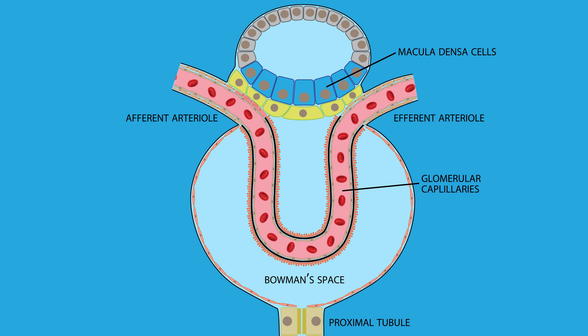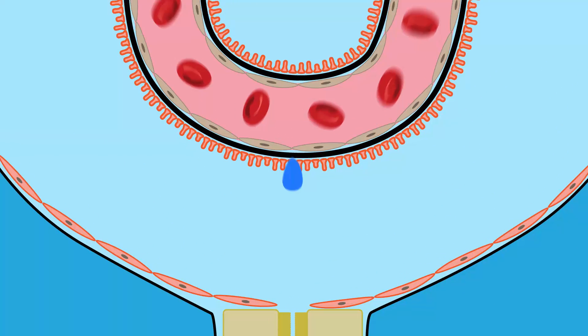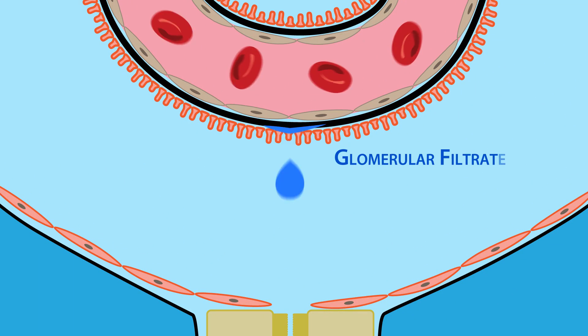Under normal physiological conditions, plasma is constantly flowing through the glomerular capillaries. Because of this, the glomerular filtrate is constantly being formed.